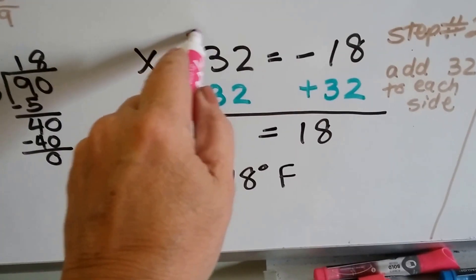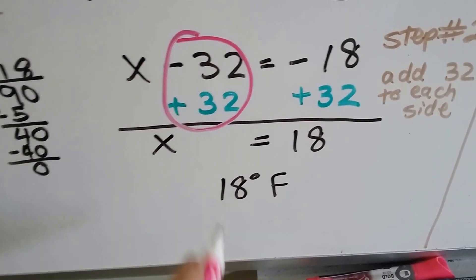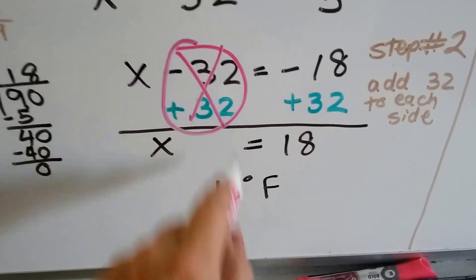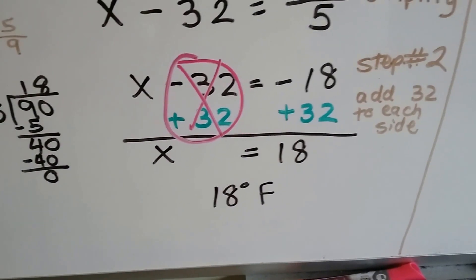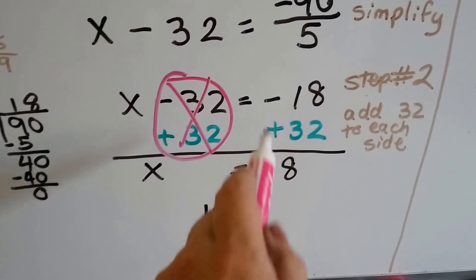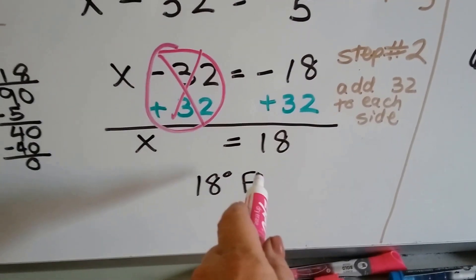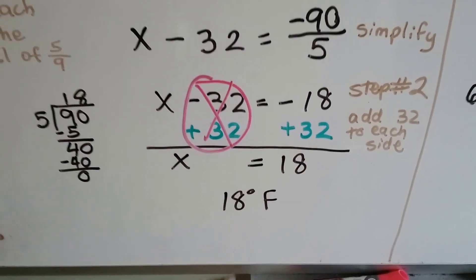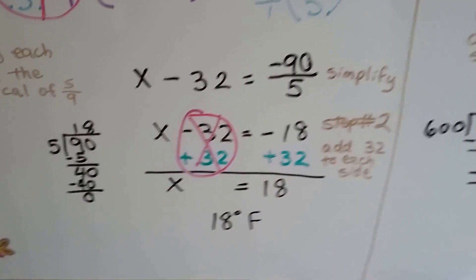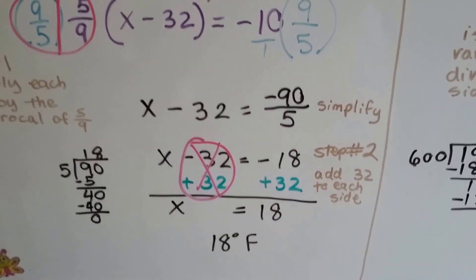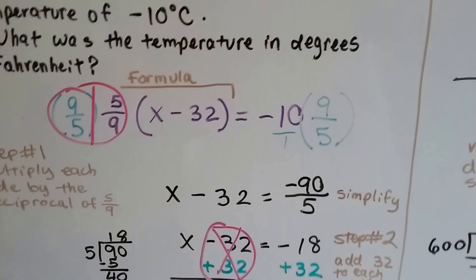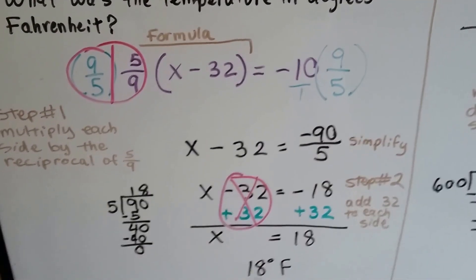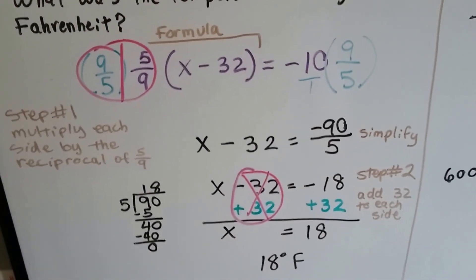We create a zero pair. If you have negative 32 and you add 32, it creates zero. And negative 18 plus 32 makes positive 18. So we know it's 18 degrees Fahrenheit. Minus 10 degrees Celsius is the same thing as 18 degrees Fahrenheit.